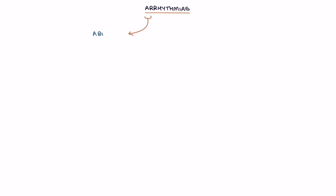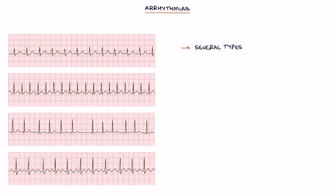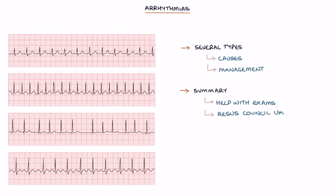Arrhythmias are abnormal heart rhythms. They result from an interruption to the normal electrical signals that coordinate the contraction of the heart muscle. There are several types of arrhythmias, each with different causes and different management options. This section is a summary to help with exam preparation, based on the guidelines from the Resuscitation Council UK from 2021. Attend the relevant courses, follow full guidelines, and involve experienced seniors when treating patients.